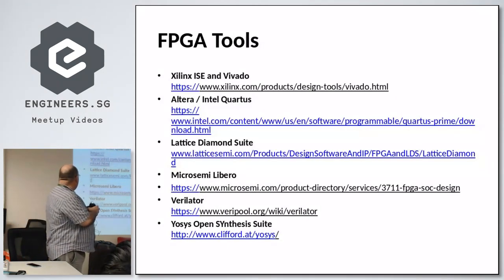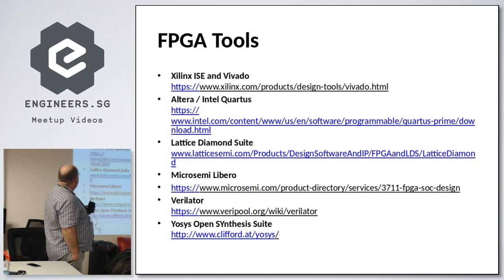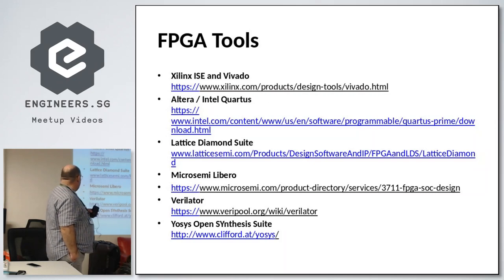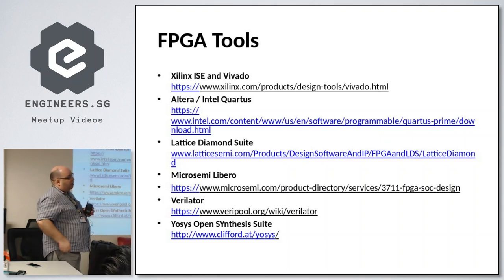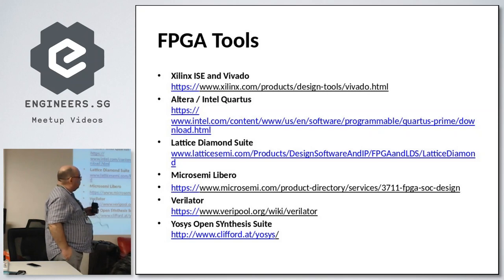These are the tools — I'll make the PDF available on the site. We have Xilinx, which has ISE and Vivado. Intel FPGA (formerly Altera) has Quartus. Two others which are quite popular for low-cost FPGAs are Lattice and MicroSemi, with the Diamond Suite and Libero respectively. And then two tools becoming quite popular because they are open source and free, with an open source community behind them: Verilator and YoSys.